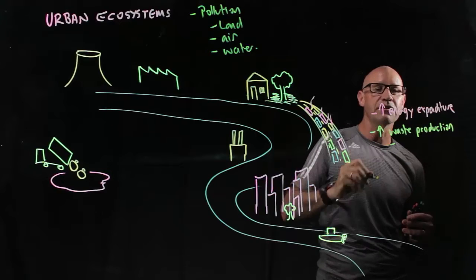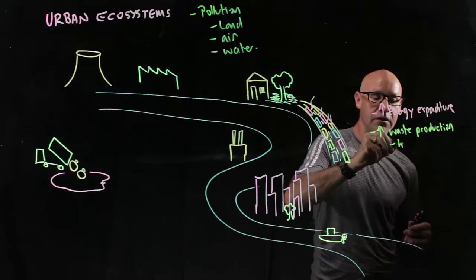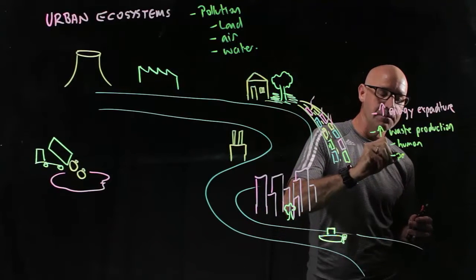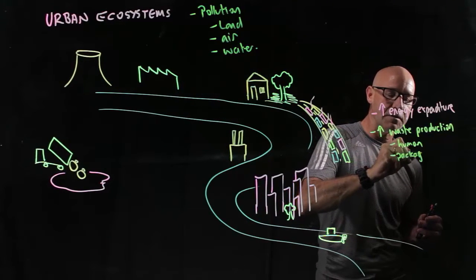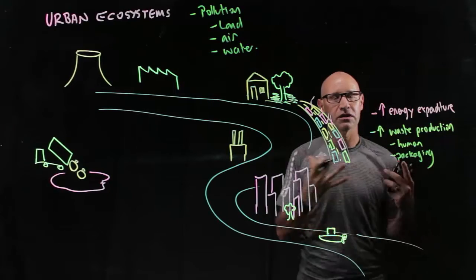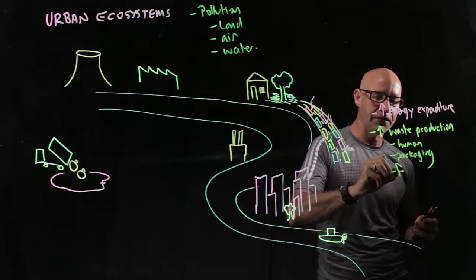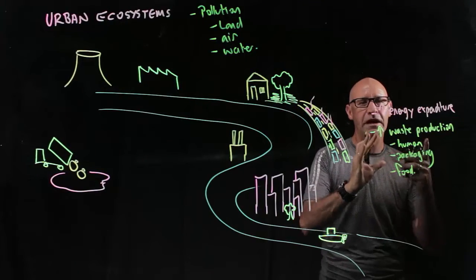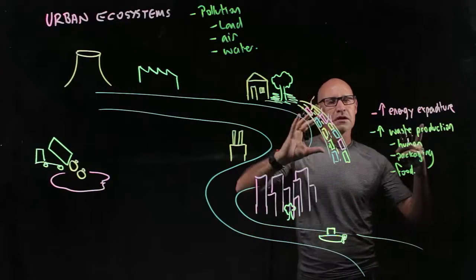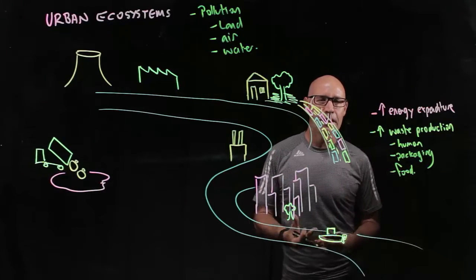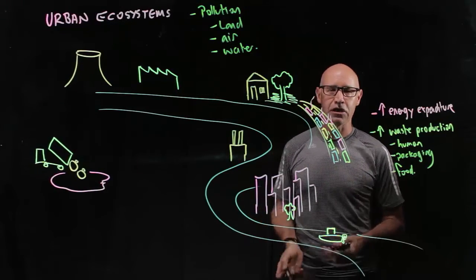Now that waste is human waste, so literally stuff down the toilet, packaging, so all of the stuff that we buy and take the packaging and discard it. And then of course, we've got a huge amount of food waste as well. So all of that's got to go somewhere. And this demand for energy and the production of waste has a negative impact on our urban ecosystems.